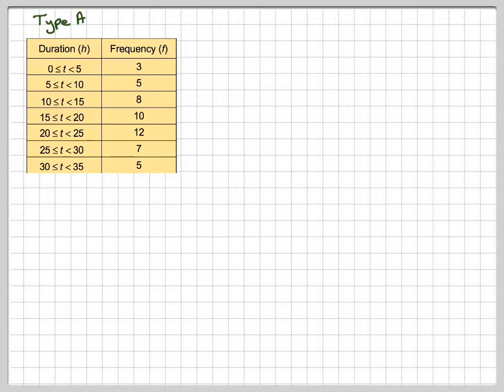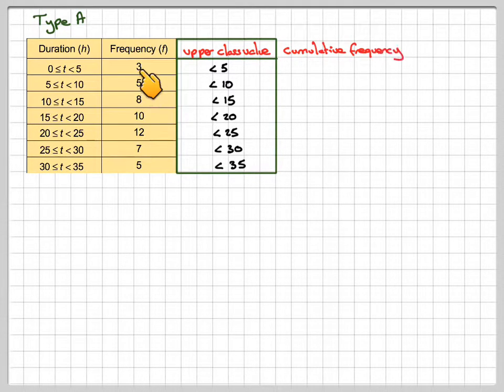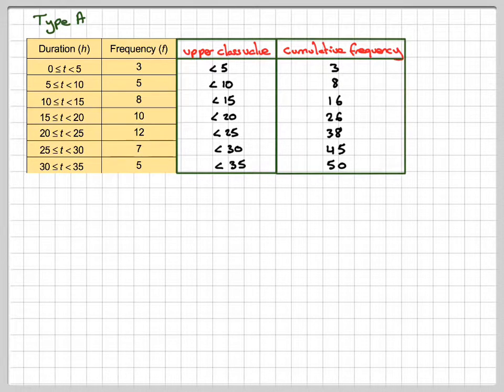So type A. Remember to draw the cumulative frequency curve, we look at the upper class value for these: less than 5, 10, 15, 20, 25, 30. And then the cumulative frequency we get by adding up the frequency. So we get 3, 8, 16, 26, 38, 45, and then 50.